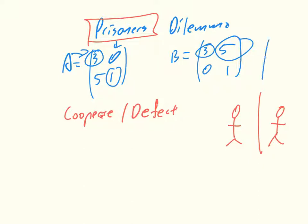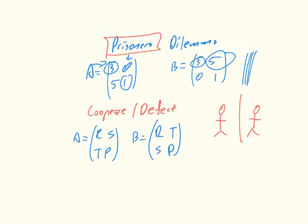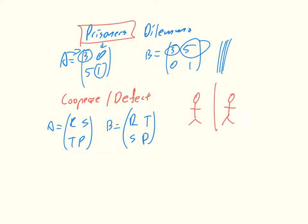As I said, this is the particular values of the game that are often used, but a general form of the game is that A is equal to R, S, T, and P, and then B is equal to R, T, S, and P, with the following inequalities.